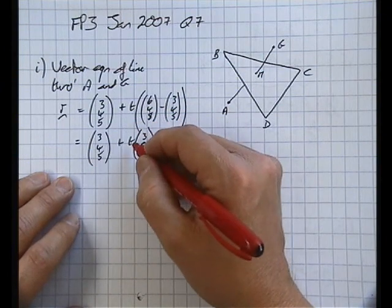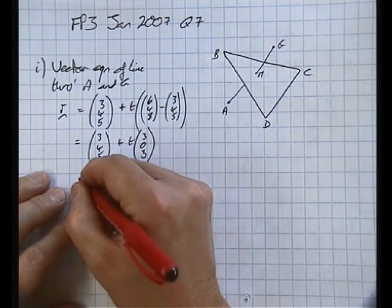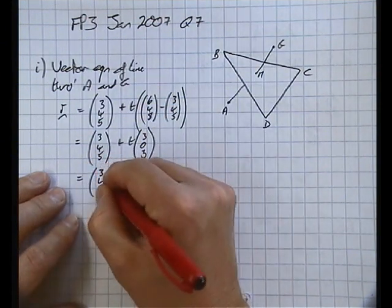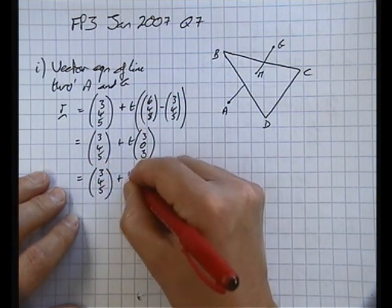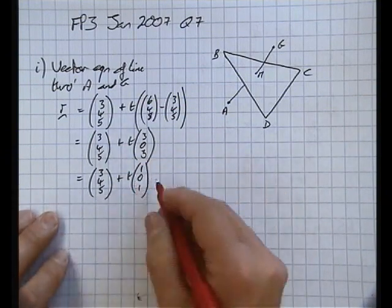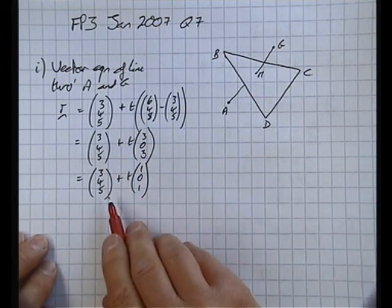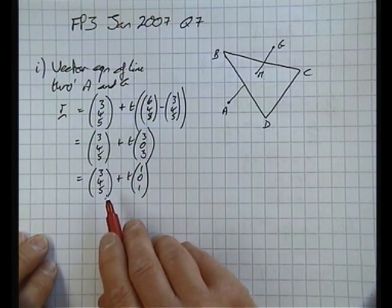Now I can simplify that to (3, 4, 5) plus t lots of (3, 0, 3). T doesn't have to be any particular number, and I can simplify (3, 0, 3) as well, and so use instead (3, 4, 5) plus t lots of (1, 0, 1) just by adjusting the value of t, and that's a much easier vector to work with. So that's the vector equation of the line through A and G.